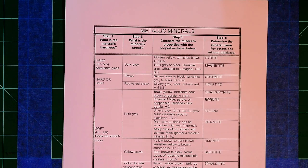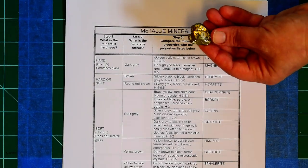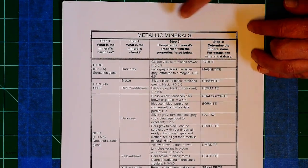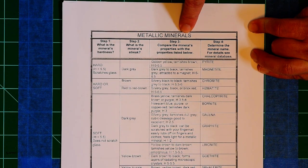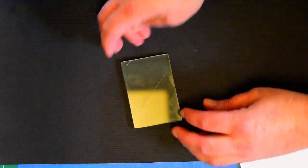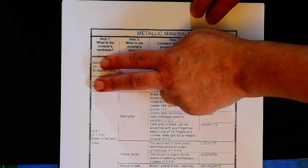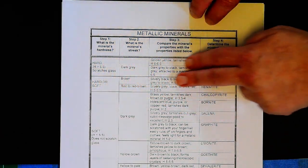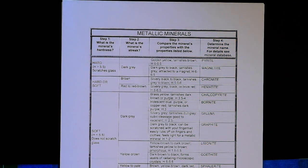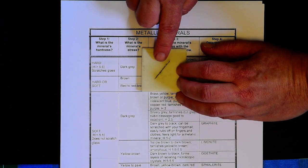Let's see how identification works in practice. Take this mineral — its luster is metallic, it looks almost like gold. Go to the metallic minerals identification chart and follow the steps. Step one is hardness: scratch it against glass — it leaves a scratch, so it's hard. Step two is streak: rubbing it on the ceramic plate gives a dark gray streak.